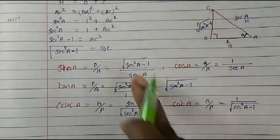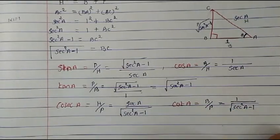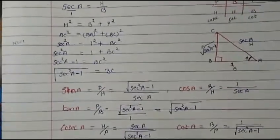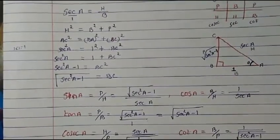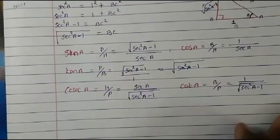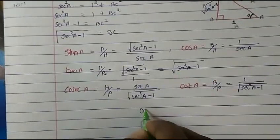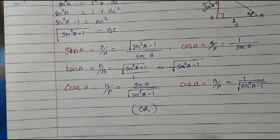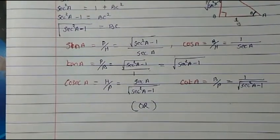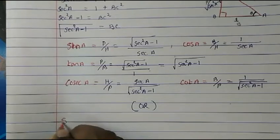So all the other trigonometric ratios are now expressed in terms of sec. This is one easy method. Alternatively, you can use trigonometric identities.